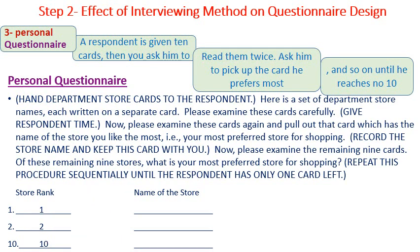Number three: personal questionnaire. The respondent is given ten cards, then the interviewer asks the respondent to read them. After that, the interviewer asks the respondent to pick up the card they prefer most, which includes the department store they prefer most, and so on until reaching number 10.